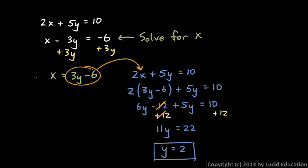But the algebra to solve for x has already been done right there. So let's just plug in y right there. x is going to be 3 times 2 minus 6. So that's 6 minus 6. x is 0.